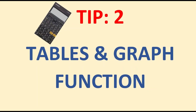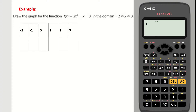In this example, we need to draw the graph for the function f(x) = 2x² - x - 3 in the domain -2 to 3. The domain gives us the x values: -2, -1, 0, 1, 2, 3. You can go up in halves or decimals for more precision. First, we need to type in this function on our calculator.